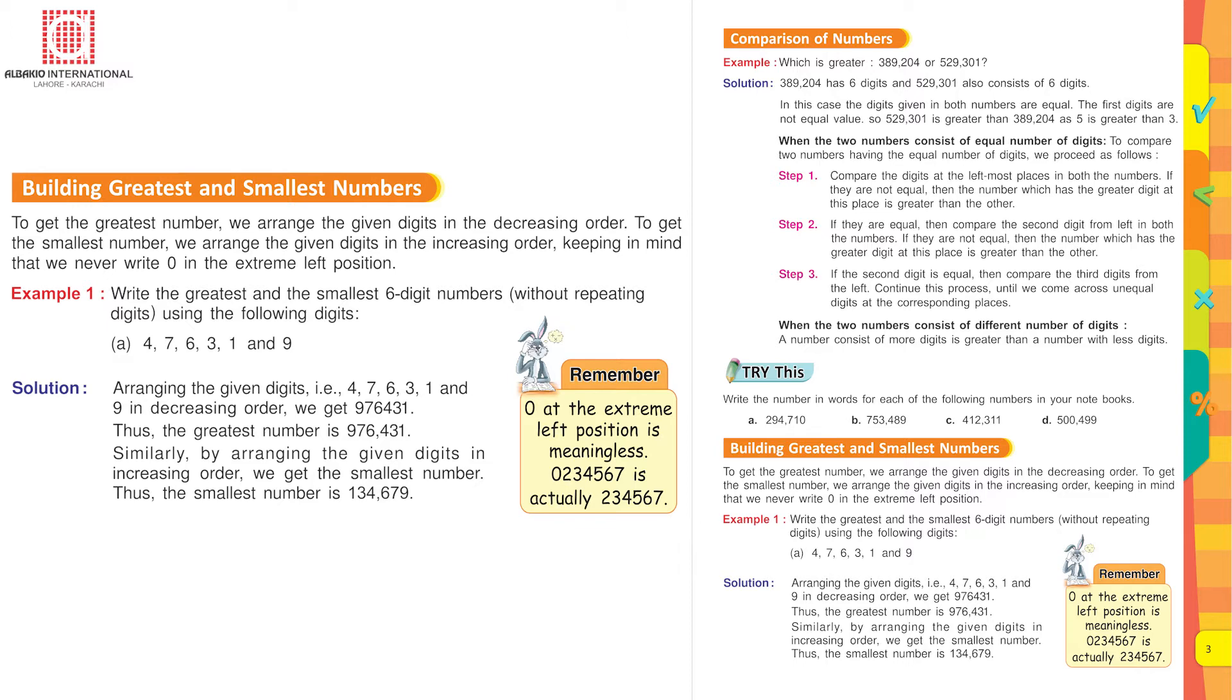Now the digits are 4, 7, 6, 3, 1 and 9. Arrange the given digits 4, 7, 6, 3, 1 and 9 in decreasing order. Do you know what is decreasing order? Yes. From more to less. We get 976, 4, 3, 1. Thus the greatest number is 976,431. Similarly by arranging the given digits in increasing order we get the smallest number. Put the first digit once at the 100,000th place that is 134,679 and you read it 134,679.